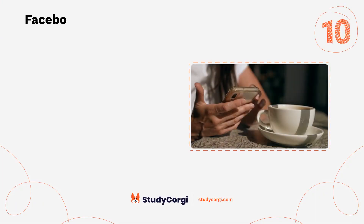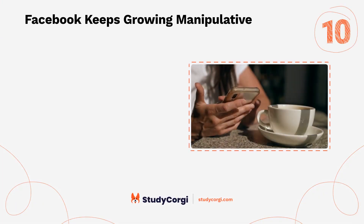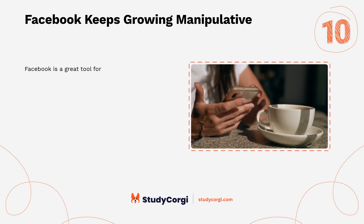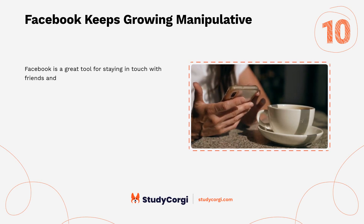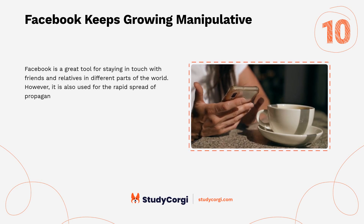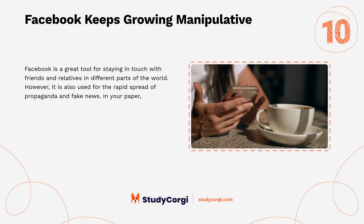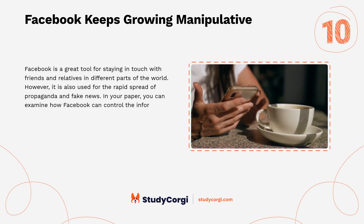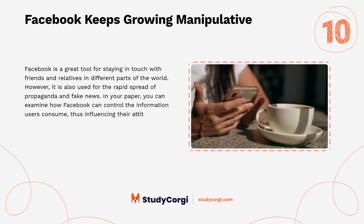Facebook keeps growing — manipulative. Facebook is a great tool for staying in touch with friends and relatives in different parts of the world. However, it is also used for the rapid spread of propaganda and fake news. In your paper you can examine how Facebook can control the information users consume, thus influencing their attitudes and behaviors.